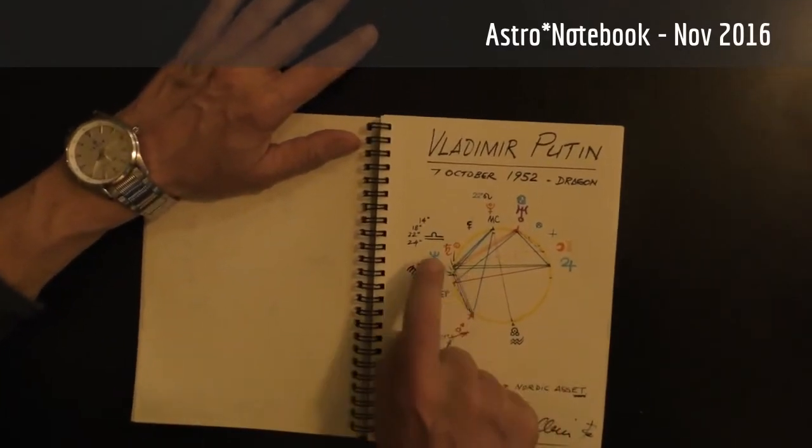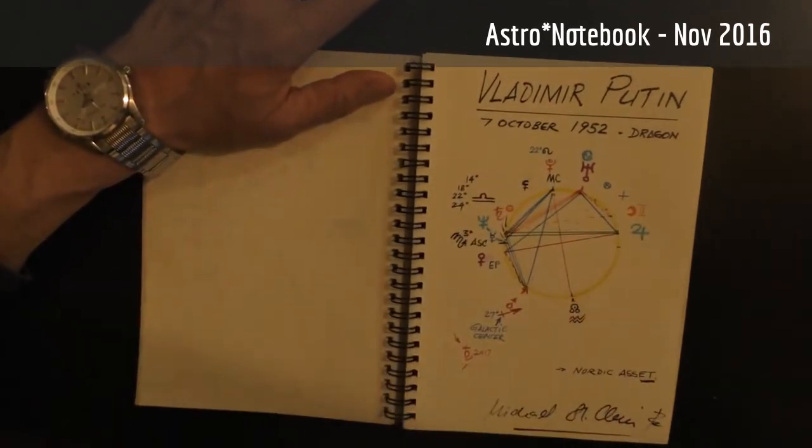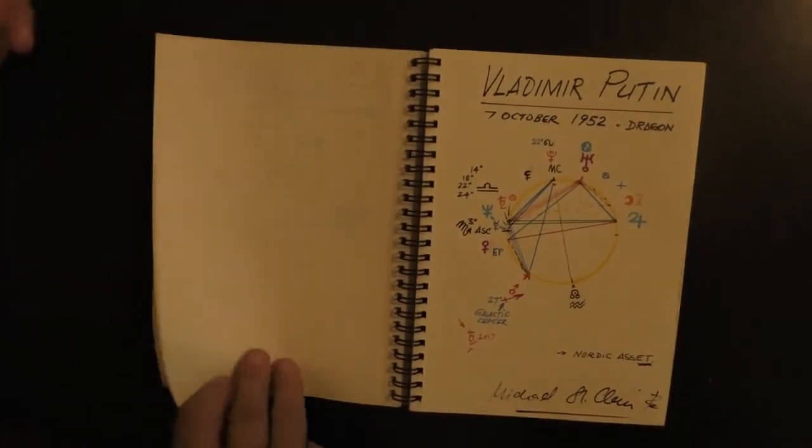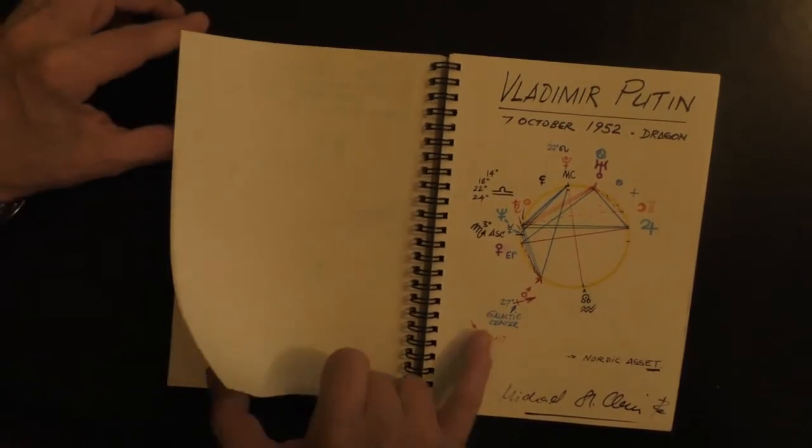Scorpio rising, Neptune-Mercury conjunction. Putin is a seer, so I made some special Mars on the Galactic Center, right, the guys, freedom.